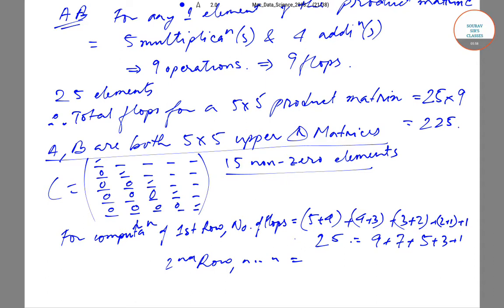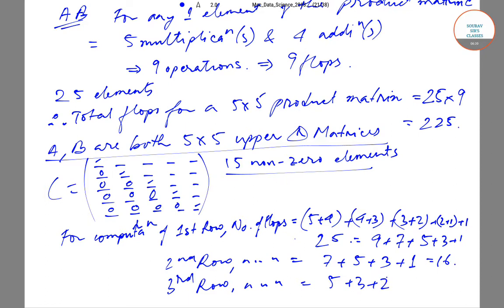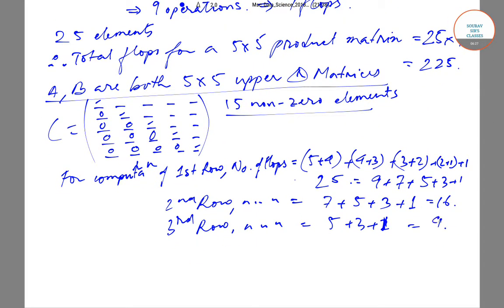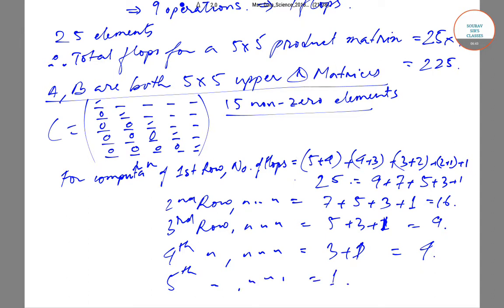For the third row, number of flops will be equal to 5 + 3 + 1 = 9. For the fourth row, number of flops will be equal to 3 + 1 = 4. And for the fifth row, the final row, we will only have one operation, so flops = 1.